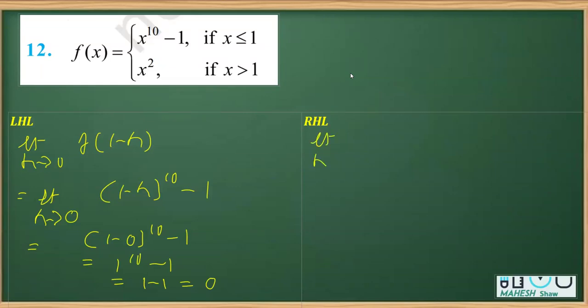For the RHL, limit h tends to 0, f(1 plus h). Here we are going to replace the function—the definition has changed now. For x greater than 1, it is x squared. So we'll be writing this as (1+h) whole square. If I replace h with 0, it's (1+0) whole square. So it's 1 square only, that is equal to 1.